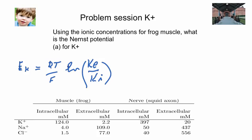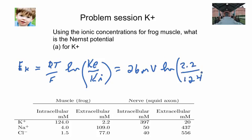So now the logarithm of extracellular over intracellular — that'll be 2.2 over 124. The units aren't important here as long as they're the same units. If you think about taking the logarithm of 2.2 over 124, it's a number less than 1, so you know right away that this is going to equal minus 26 millivolts times the logarithm of 124 divided by 2.2. I'll leave that up to you to complete the calculation.